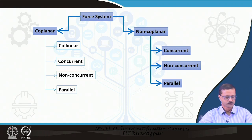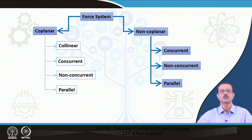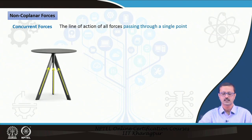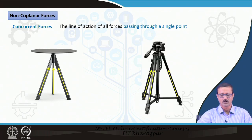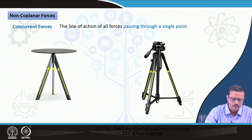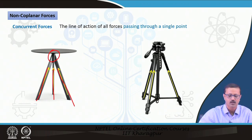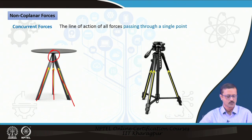Non-coplanar concurrent forces are those not in the same plane, but where their lines of action pass through a single point. For example, a tripod with three legs: all three legs meet at the same apex point, but the three forces are definitely not in the same plane. So it is concurrent but non-coplanar.